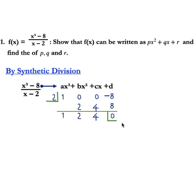Now from this, we have that the coefficient of x² is equal to 1, the coefficient of x is equal to 2, and the constant r is equal to 4. Therefore, the value of p is equal to 1, q is equal to 2, and r is equal to 4.